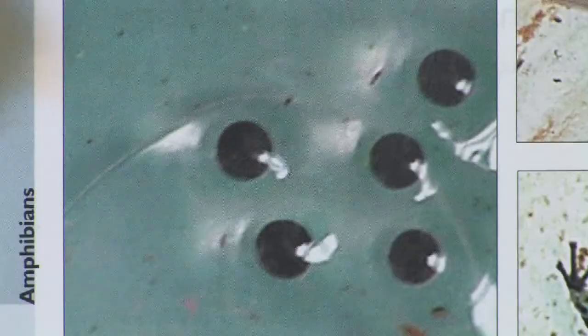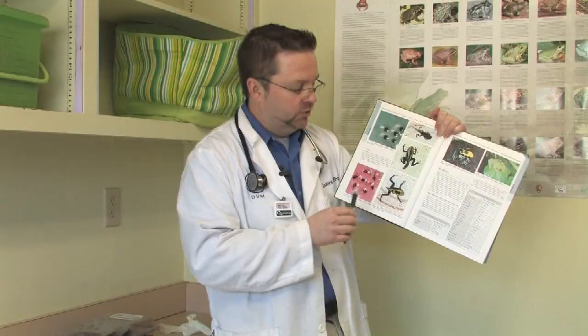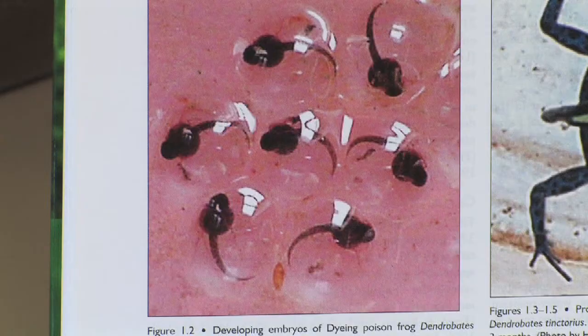Let's talk about the frog life cycle. Frogs lay their eggs in a gelatinous mass called frog spawn. These eggs then develop into tadpoles, and those tadpoles are going to start forming a tail and gills — that's how they breathe within water.